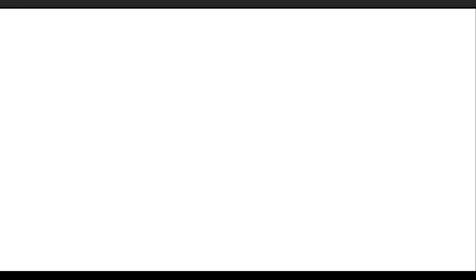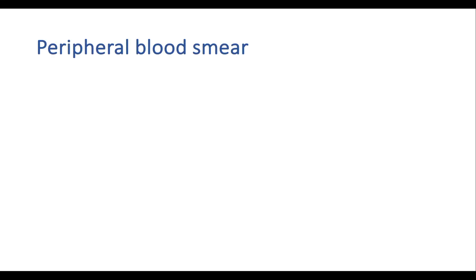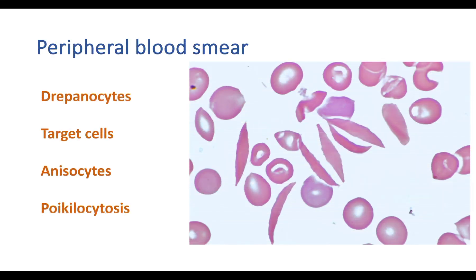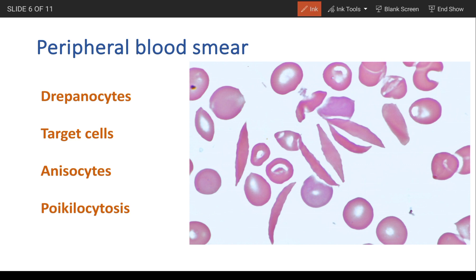Peripheral blood smear findings: Drepanocytes, also known as sickle cells, are a hallmark of sickle cell anemia. Target cells refer to RBCs with a bull's-eye appearance. Anisocytes are red blood cells of unequal sizes, and poikilocytes indicate abnormal variability in the shape of RBCs. These are the characteristics observed in sickle cell anemia.